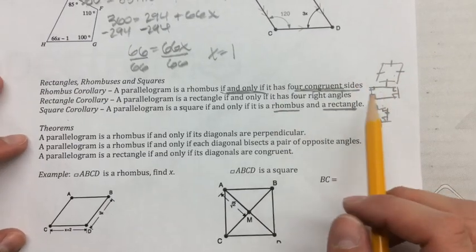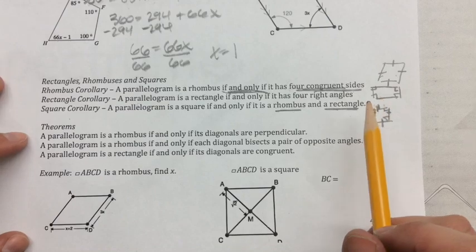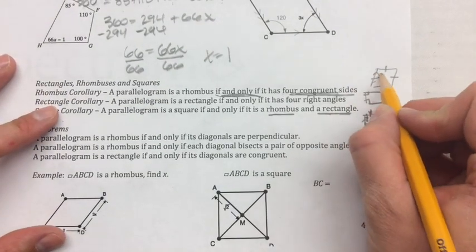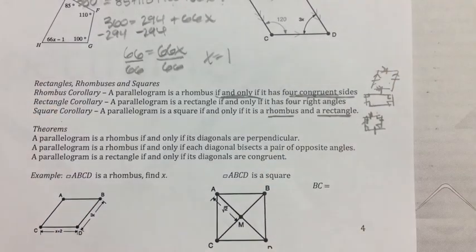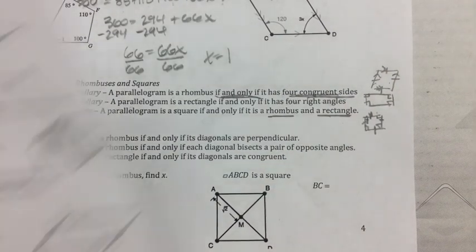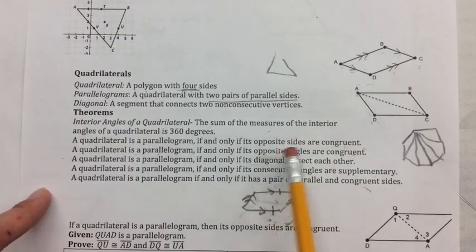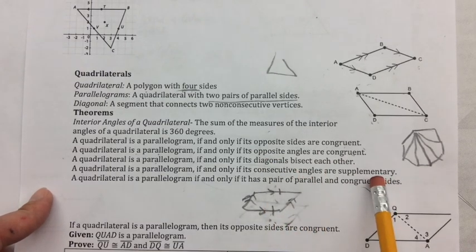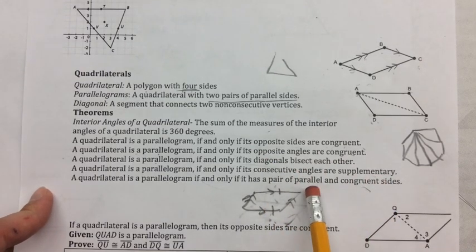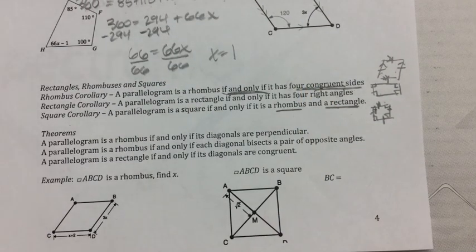Now that we know these properties, remember that these three shapes are all still parallelograms, meaning that we know these sides are parallel. So for rectangles, rhombuses, and squares, we know opposite sides are congruent, opposite angles are congruent, the diagonals bisect each other, consecutive angles are supplementary, and a pair of parallel and congruent sides.